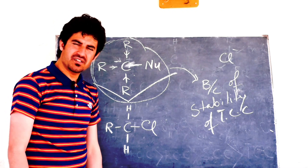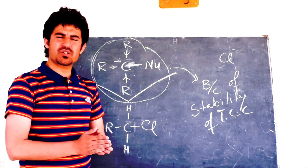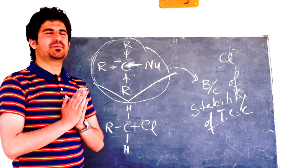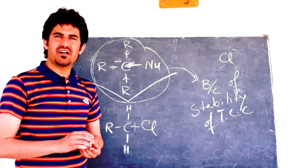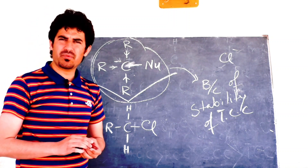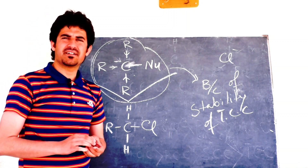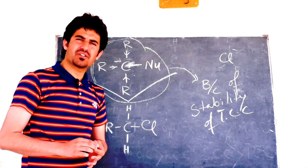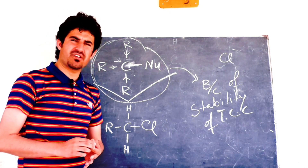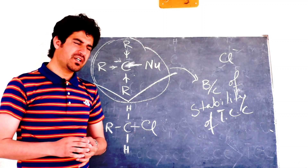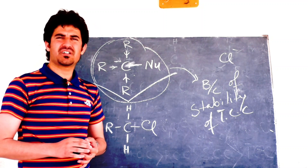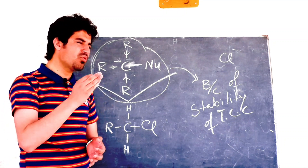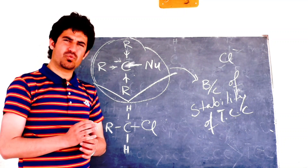This was all about the question that arises from students: if the tertiary carbocation is more stable, why is it more reactive? The answer is that the tertiary alkyl halides are more reactive than primary alkyl halides. Thank you so much for watching. Kindly subscribe to my channel Chemistry Tube by Dur Muhammad Nasser, and like my Facebook page Dur Chemist Official for more conceptual chemistry lectures.